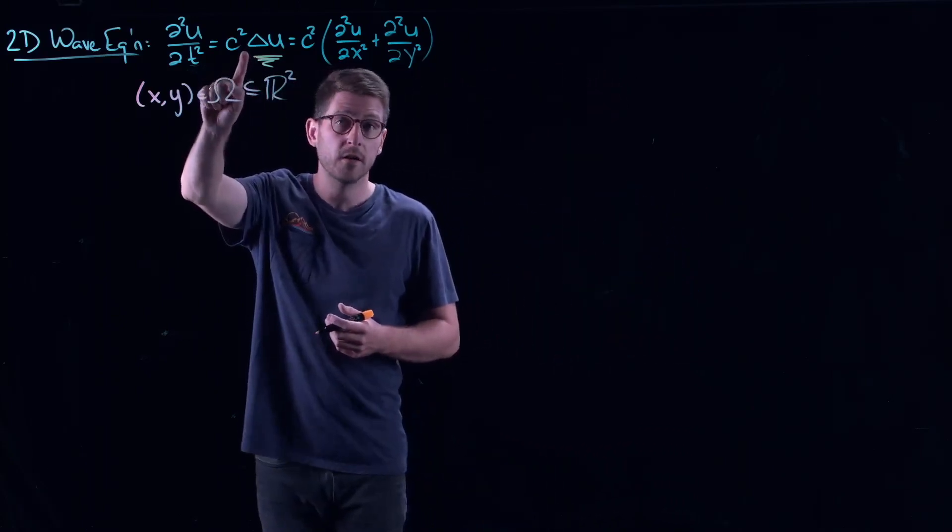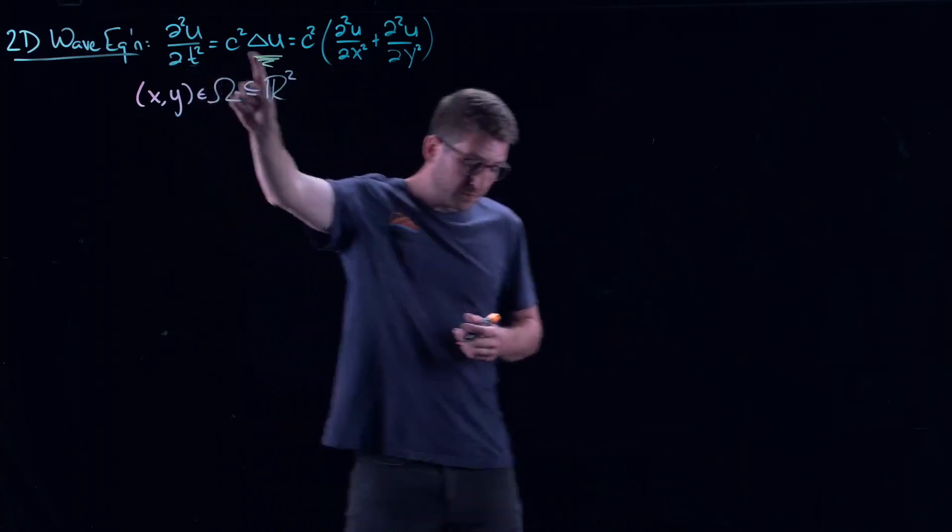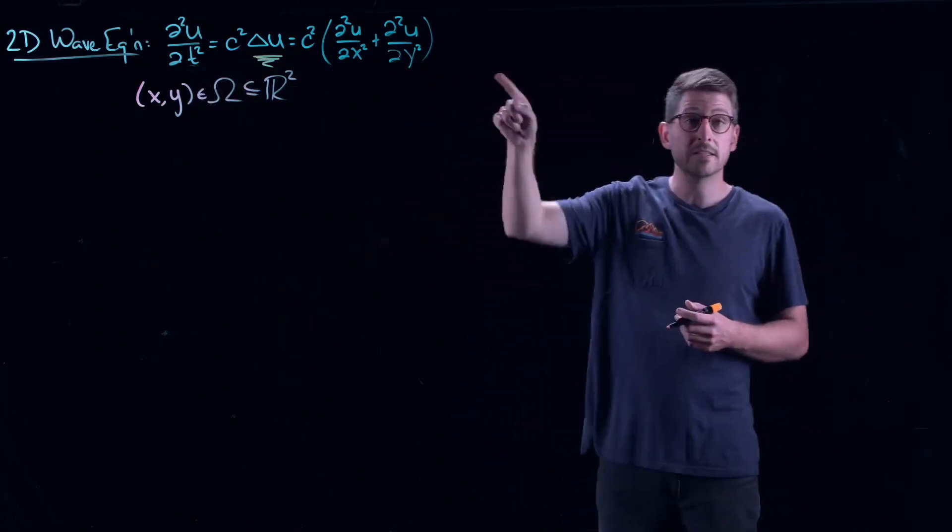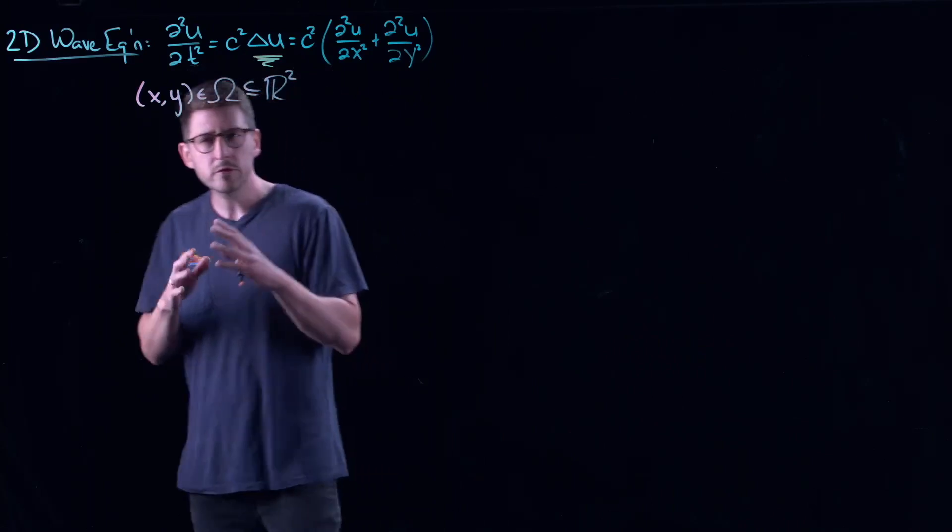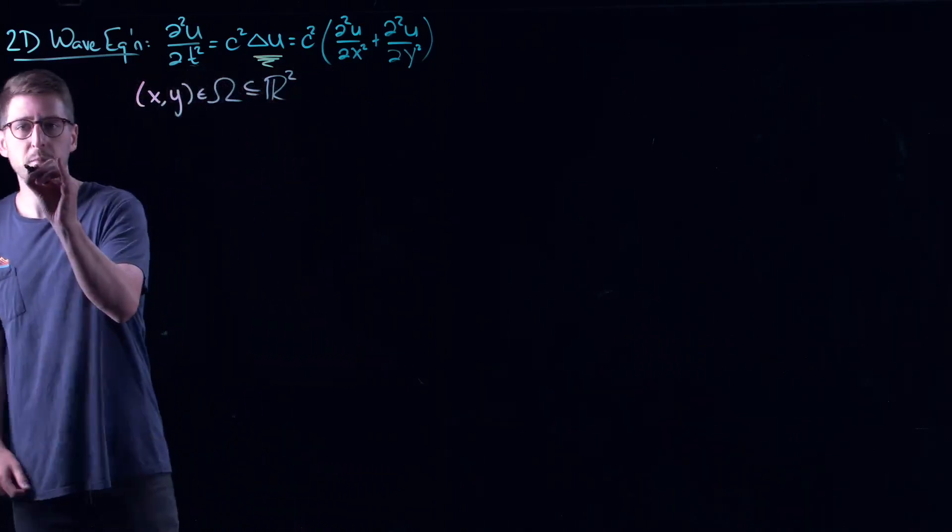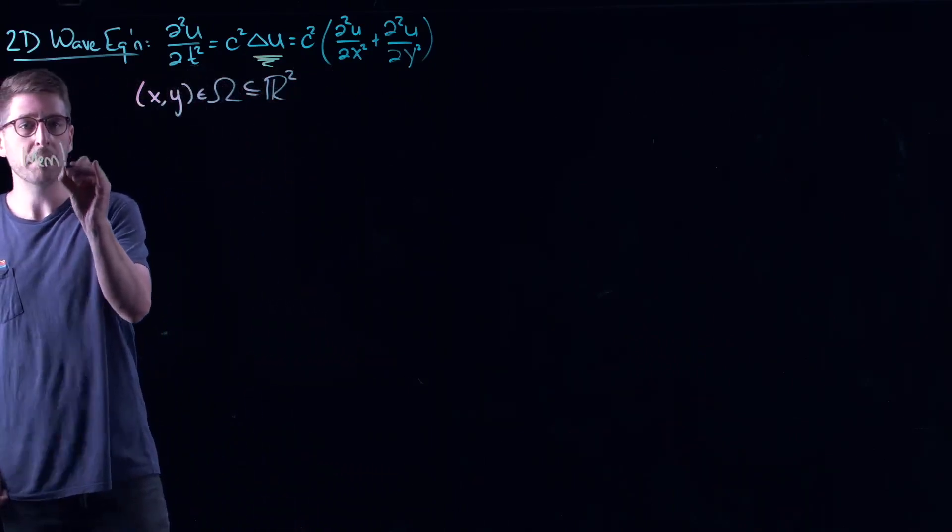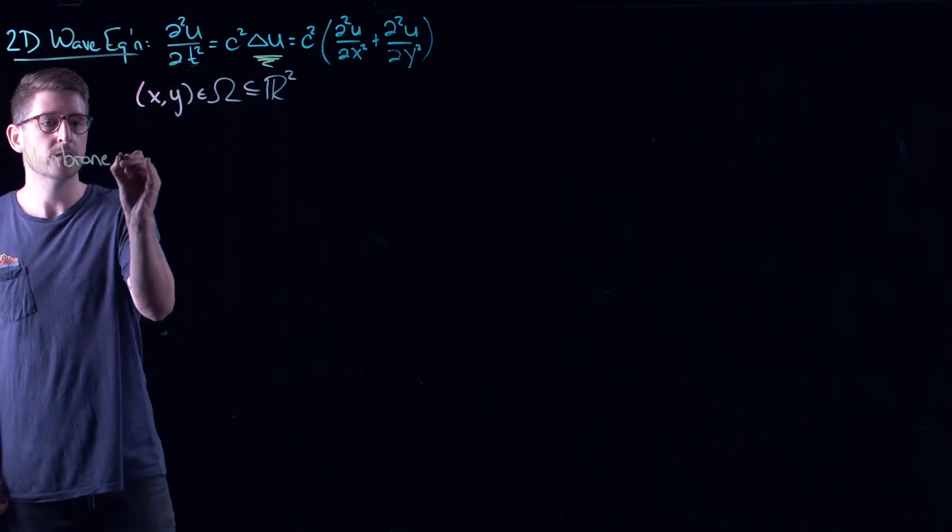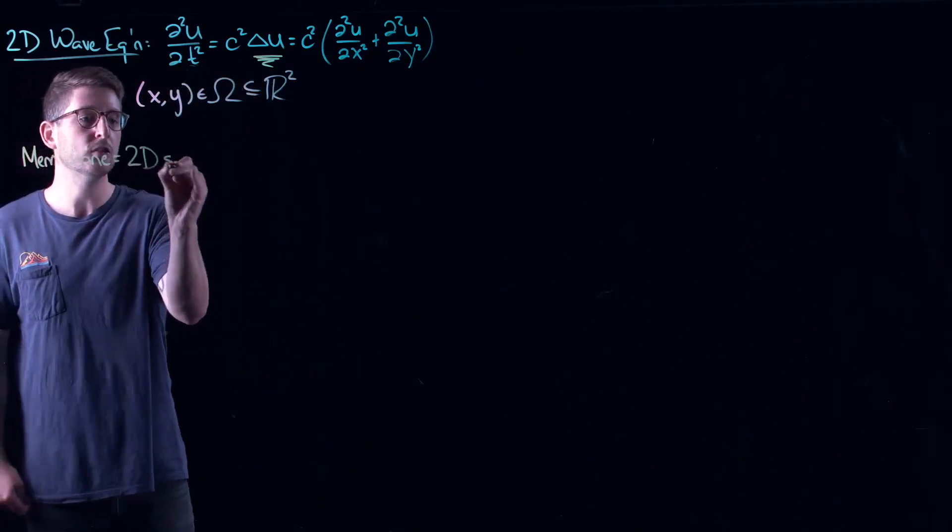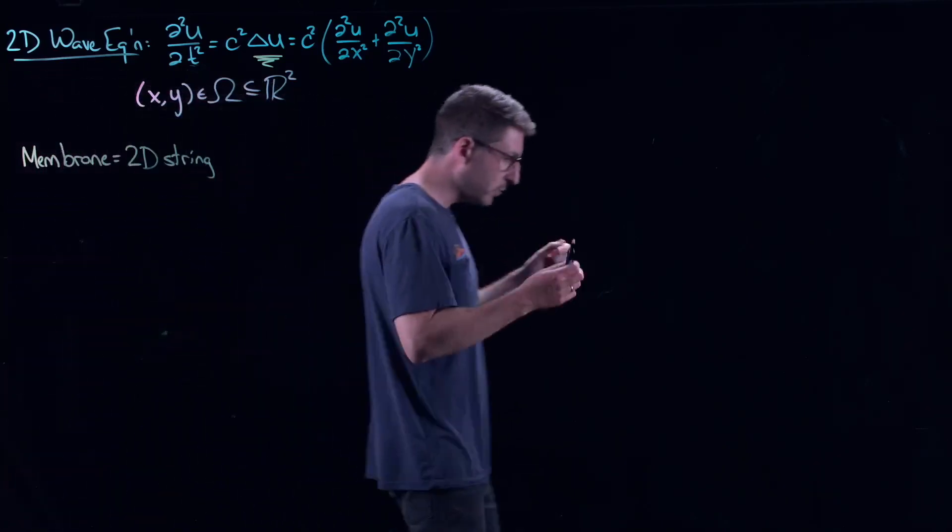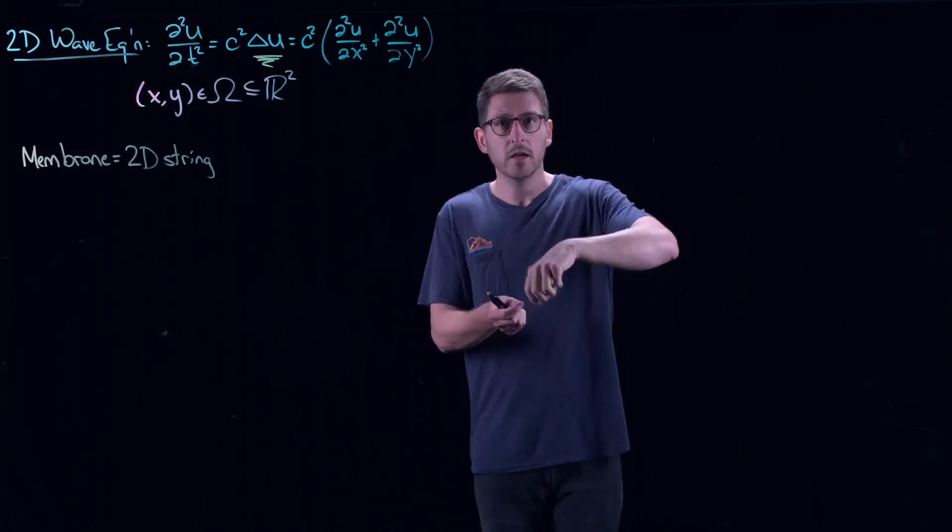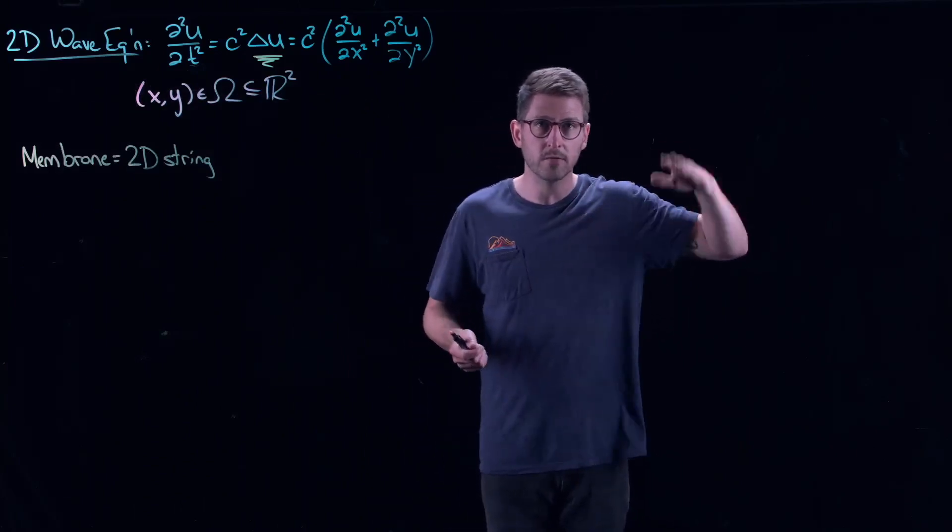Now, where does this come from? First of all, this can come from the same derivations that we did for a string, but in this case for what we refer to as a 2D string. In particular, that's what we call a membrane. So this would be like a 2D string.